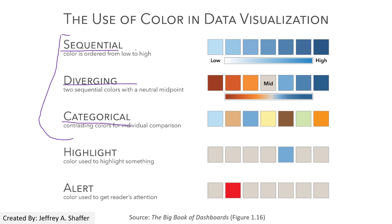Sequential means we use a single hue, but we change either the saturation or the brightness of the color to represent quantities — to represent different ranges of numbers. That is sequential.